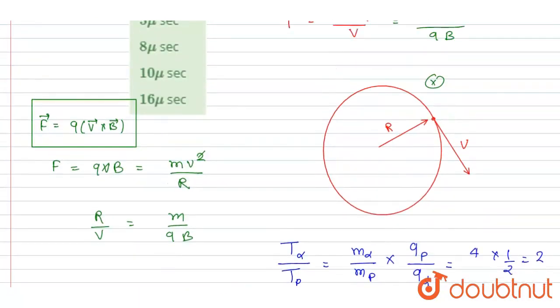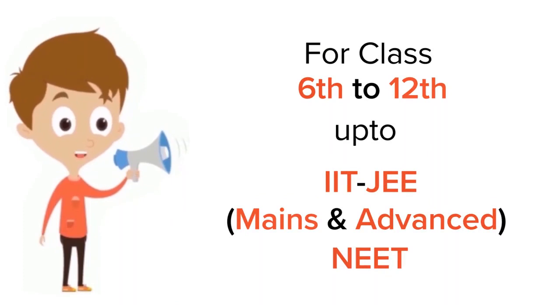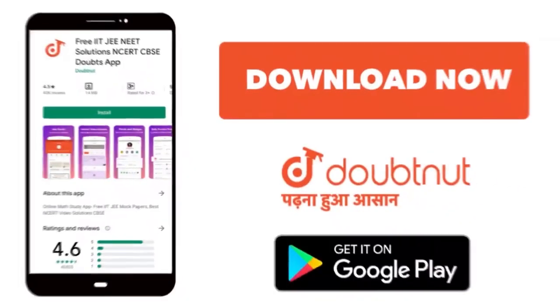Now check for the option. C is the correct one. Thank you. For class 6 to 12, IIT-JEE and NEET level, trusted by more than 5 crore students, download Doubtnet app today.